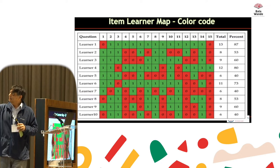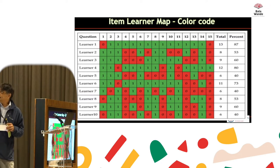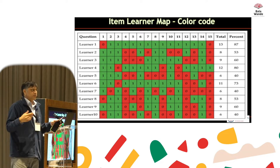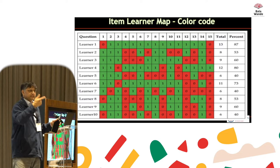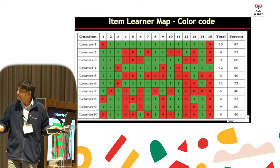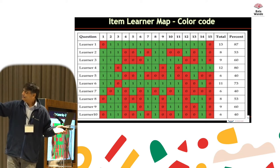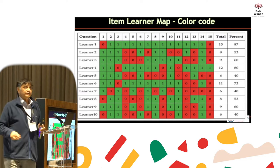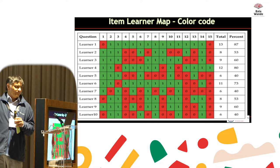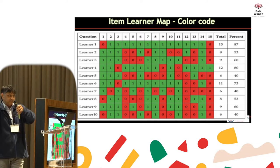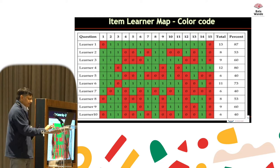An item map is very useful for learners. If you were to choose an item where learners had the most problems, which one would you choose within 30 seconds? Item 15 — because it's the most red. If you want to choose which learner, you can see that individually. But for intervention purposes, it's not useful because it doesn't tell you what the issue was. Did the learner subtract when they should have added? Did they multiply when they should have divided?